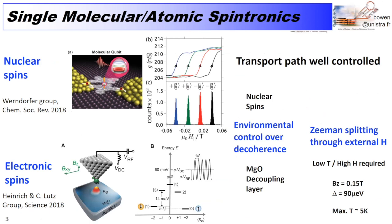There are several techniques to do molecular atomic spintronics. You usually use lateral junctions or vertical junctions using an STM tip, and you're studying molecules or individual atoms. In these cases, the transport path is very well controlled through your visualization technique, for example STM, and you can control the decoherence due to the interaction between this quantum object and its environment. In the Wernsdorfer group, the nuclear spin is being preserved relative to electronic paths, and in the case of STM, in the Heinrich group, an MgO decoupling layer is used to study the individual electronic properties of an iron adatom. In both cases, one achieves a Zeeman splitting of the paramagnetic state through an external field, which also requires low temperatures and/or high fields. In the Heinrich group example, their effective out-of-plane field gives a Zeeman splitting on the order of 100 µeV, and a maximum temperature for reasonable experiments of about 5 Kelvin.